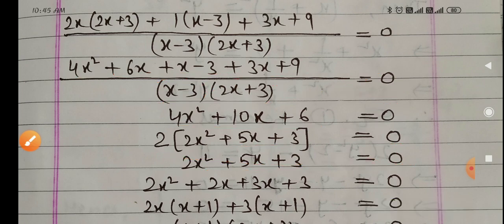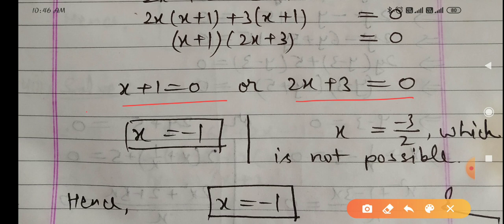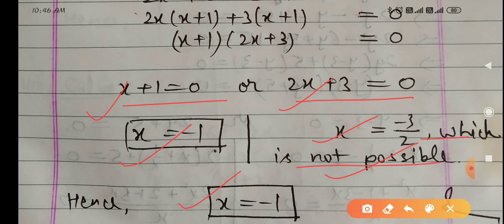Factorizing: 2x squared plus 2x plus 3x plus 3 equals 0. In the first two terms 2x is common giving (x plus 1); in the last two terms 3 is common giving (x plus 1). So (x plus 1)(2x plus 3) equals 0. Therefore x plus 1 equals 0 giving x equals minus 1, or 2x plus 3 equals 0 giving x equals minus 3 upon 2. Since x cannot be minus 3 upon 2, that value is rejected. Final answer: x equals minus 1.